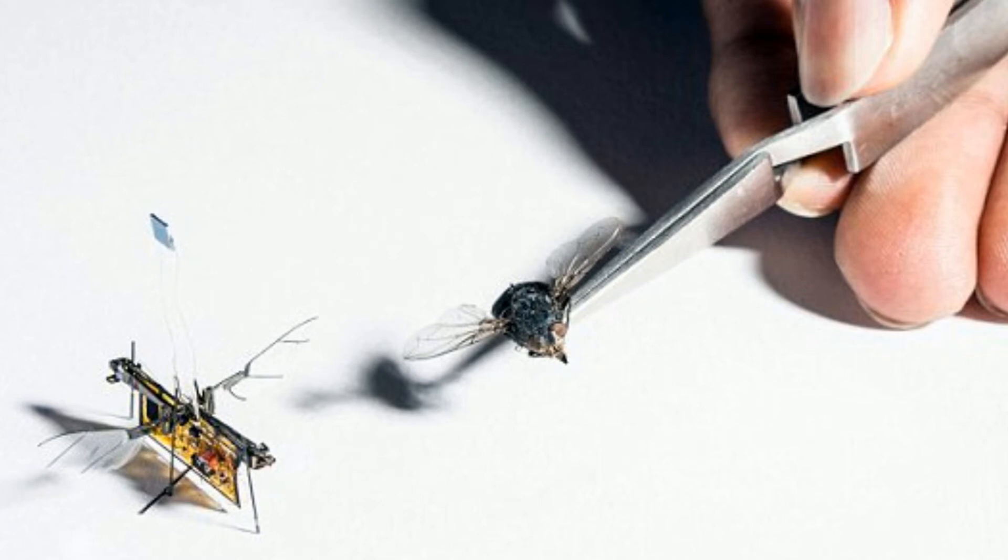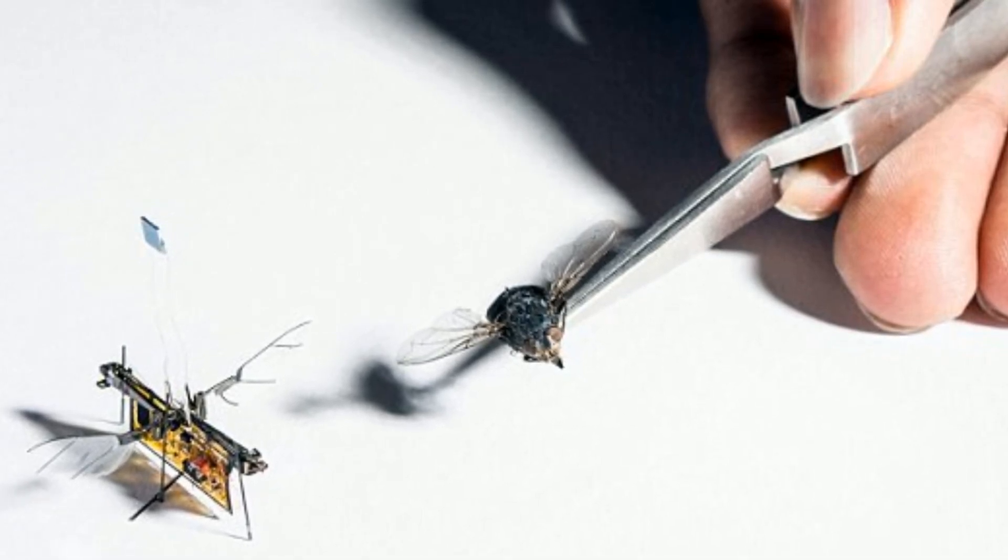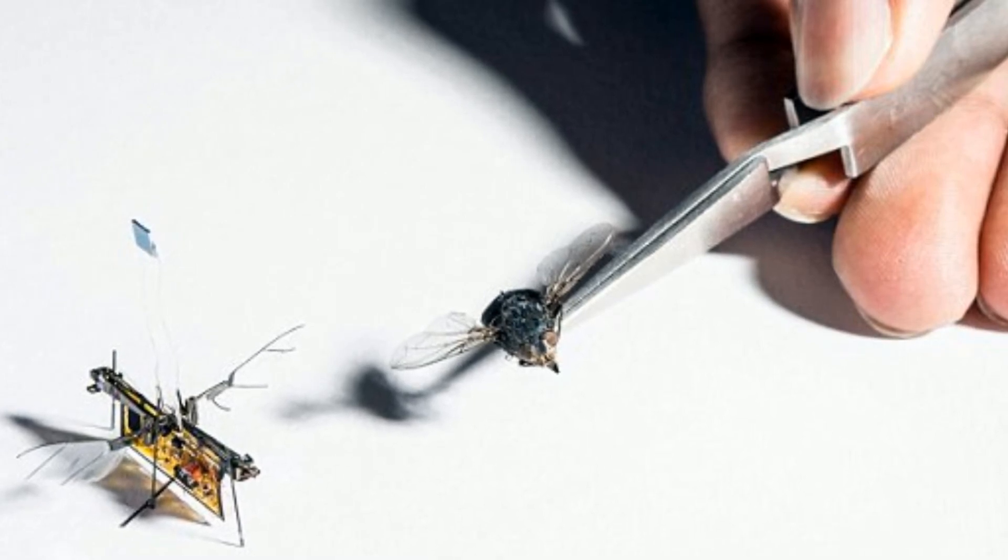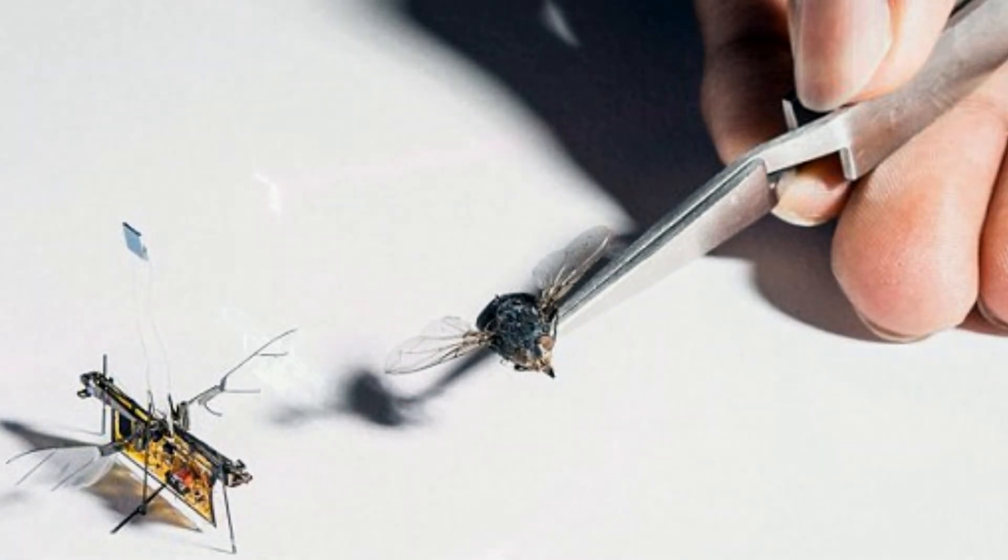'You could buy a suitcase full of them, open it up, and they would fly around your building looking for plumes of gas coming out of leaky pipes. If these robots can make it easy to find leaks, they will be much more likely to be patched up.'